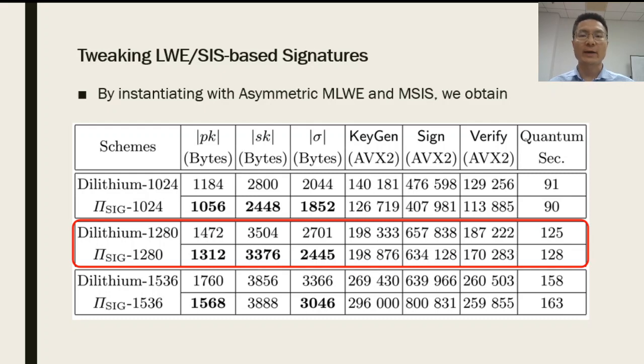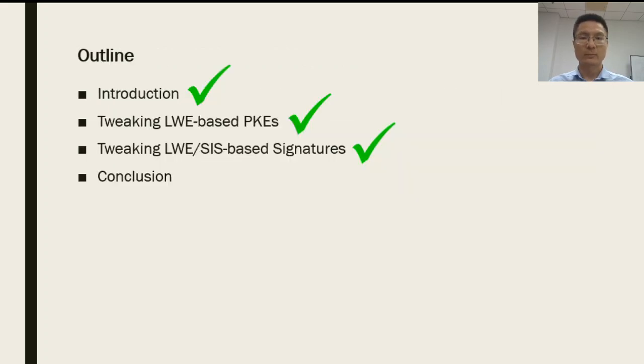By instantiating the above scheme with the asymmetric variant of modular LWE and modular SIS, we obtain a scheme with shorter public key and signatures. In particular, for almost the same computational efficiency, our scheme has shorter public key and signatures than the NIST Round-2 submission Dilithium. This finishes our third part.